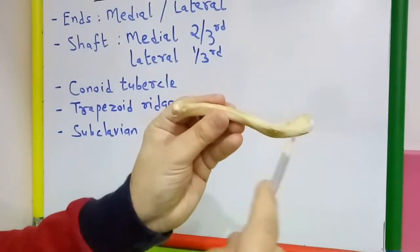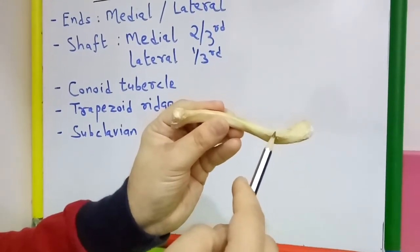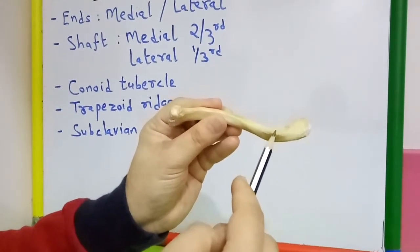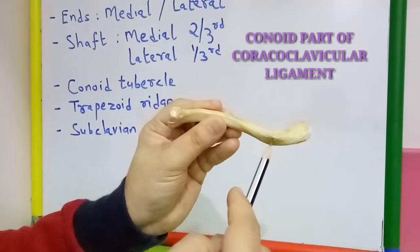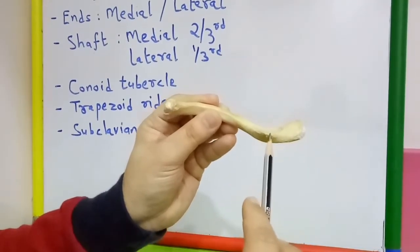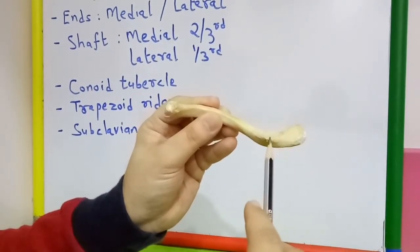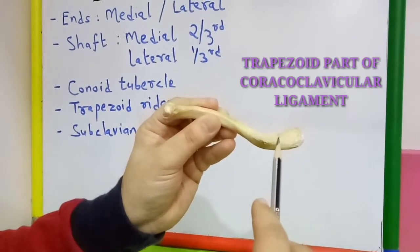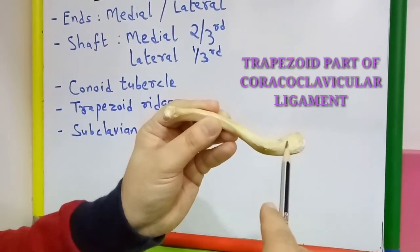On the inferior surface, the conoid tubercle gives attachment to the conoid part of the coracoclavicular ligament, whereas the trapezoid ridge gives attachment to the trapezoid part of the coracoclavicular ligament.